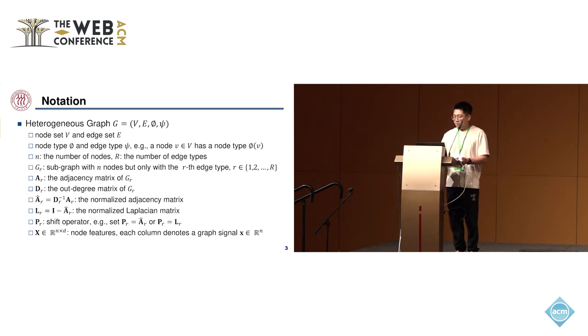For brevity, we use P_r to denote the shift operator in graph signal processing. In practice, P_r can be set as hat A_r or tilde A_r. For simplicity, we assume that all nodes have the same dimensional features and denote the feature matrix as X, and each column can be treated as the graph signal vector x.